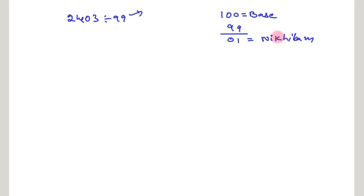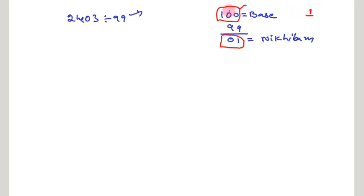Now, we are going to use the Nikhilam method of division. This Nikhilam plays an important role. If base is 100, Nikhilam should be written in 2 digits. Here the difference between 99 and 100 is 1. That can be written as a single digit, but as our base is 100, there are 2 zeros in our base. So our Nikhilam should also be in 2 digits, as in 0, 1. Let us go with the division process.